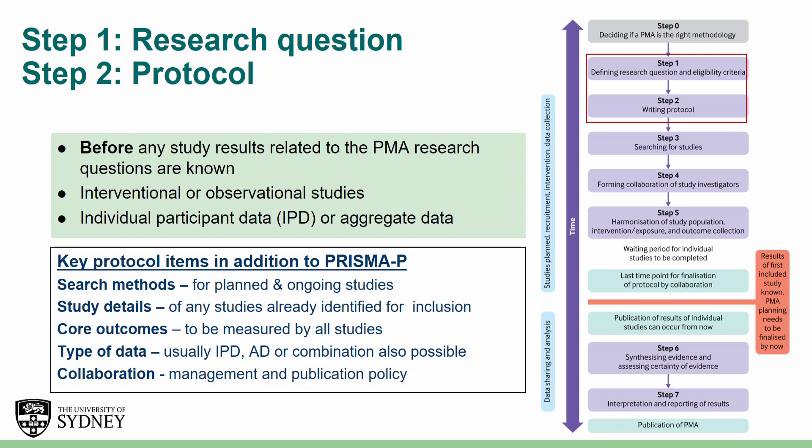Once a decision has been made to conduct a PMA, a research question needs to be defined and a protocol needs to be written. Importantly, this needs to happen before any results related to the PMA research question are known, to avoid publication and outcome selection bias. PMA can include interventional or observational studies, and they can include individual participant or archived data. There are some key additional items that need to be covered in a PMA protocol, including search methods for planned and ongoing studies and core outcomes to be measured by all studies.